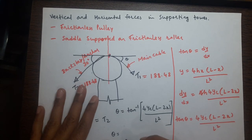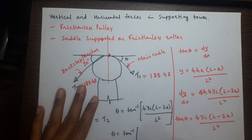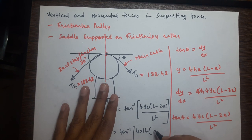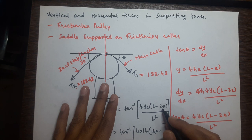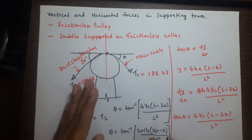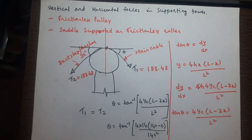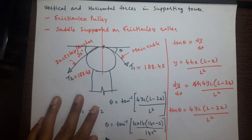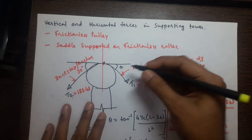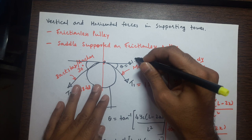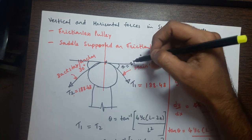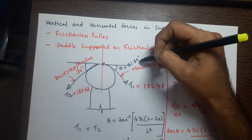Substituting x = 0: θ = tan⁻¹[4 × 14 × (140 − 0) / 140²] = tan⁻¹[4 × 14 / 140] = 21.80 degrees. So the angle of the main cable at the support is 21.80 degrees.